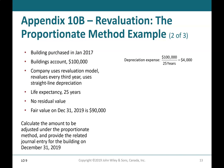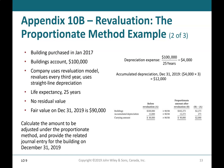Depreciation expense: $100,000 divided by 25 years equals $4,000 per year. Accumulated depreciation at December 31, 2019: $4,000 times 3 years equals $12,000. Before revaluation, the carrying amount is $88,000. The proportionate amount for revaluation is $90,000, giving an adjustment of $2,000 (B minus A). The journal entry is: debit Buildings $2,273; credit Accumulated Depreciation — Buildings $273; and credit Revaluation Surplus (OCI) $2,000.